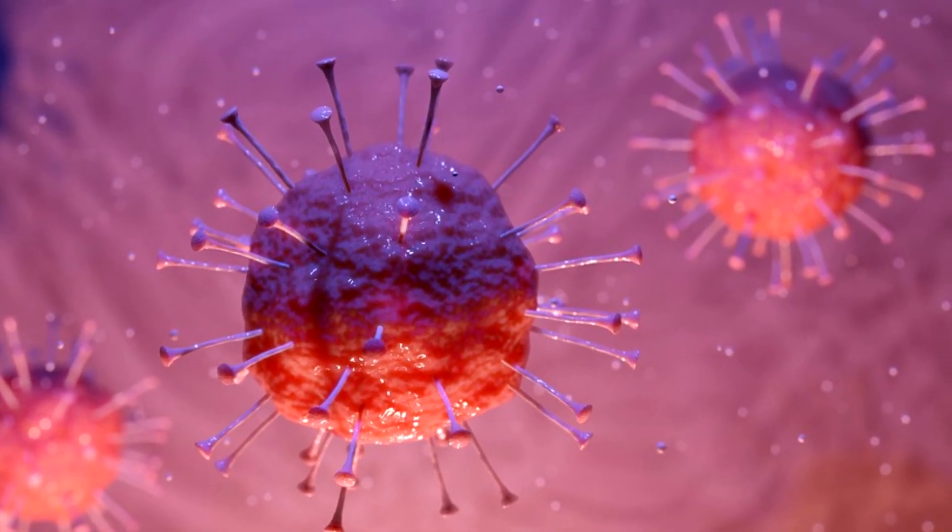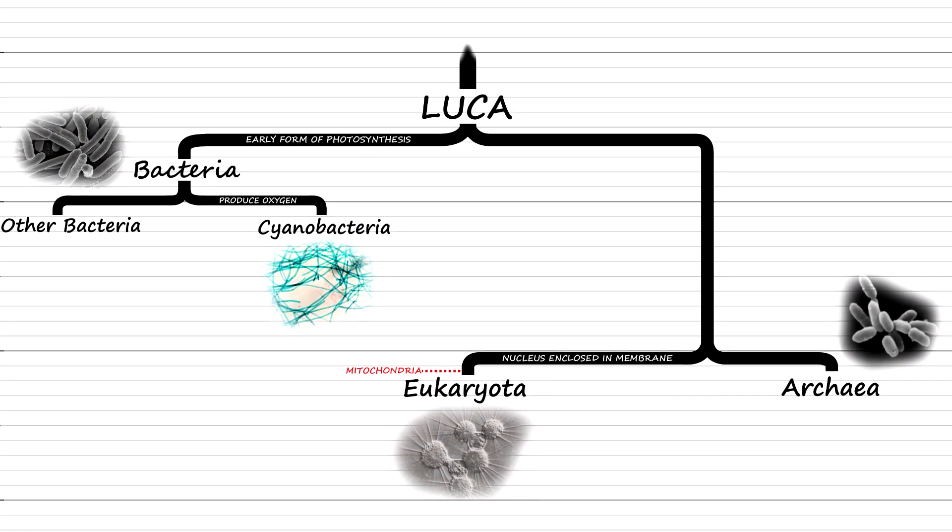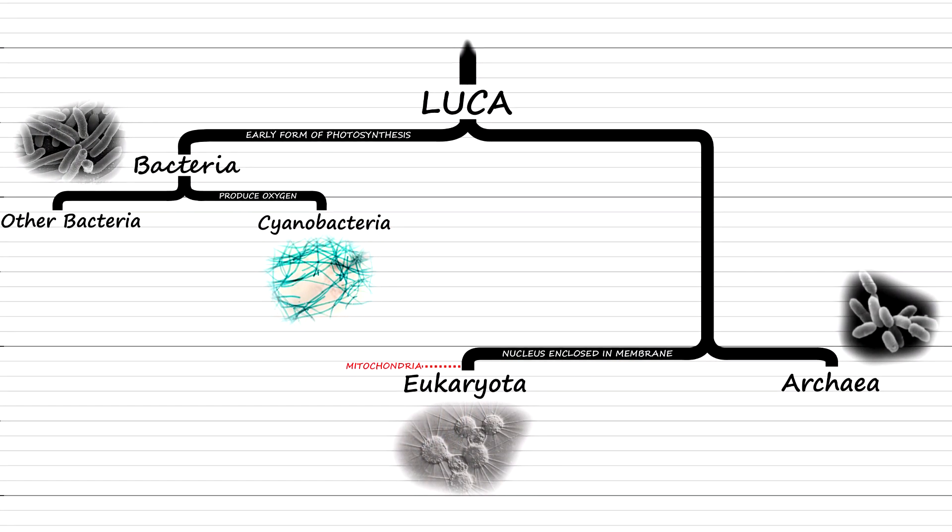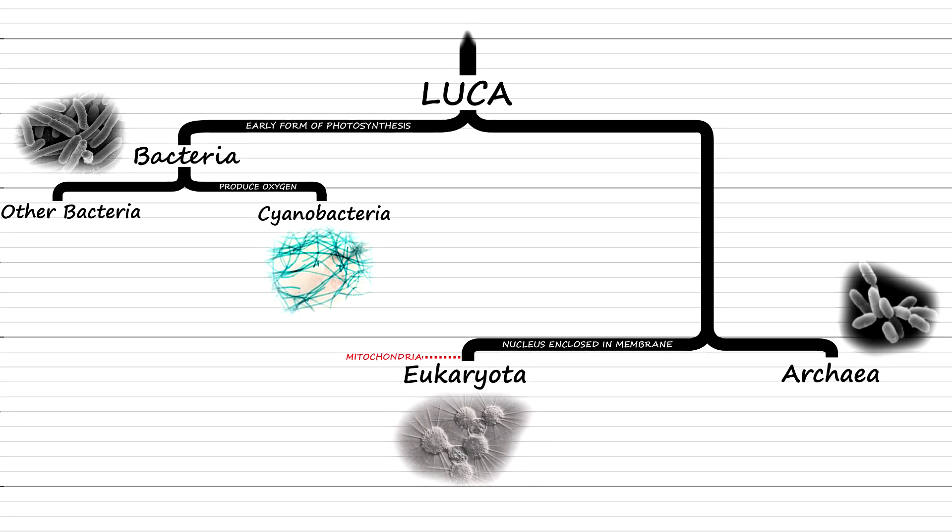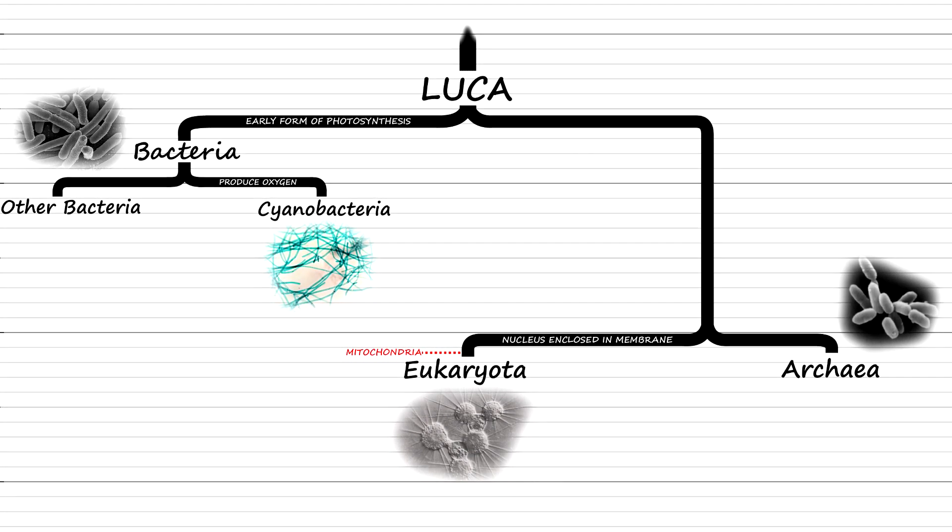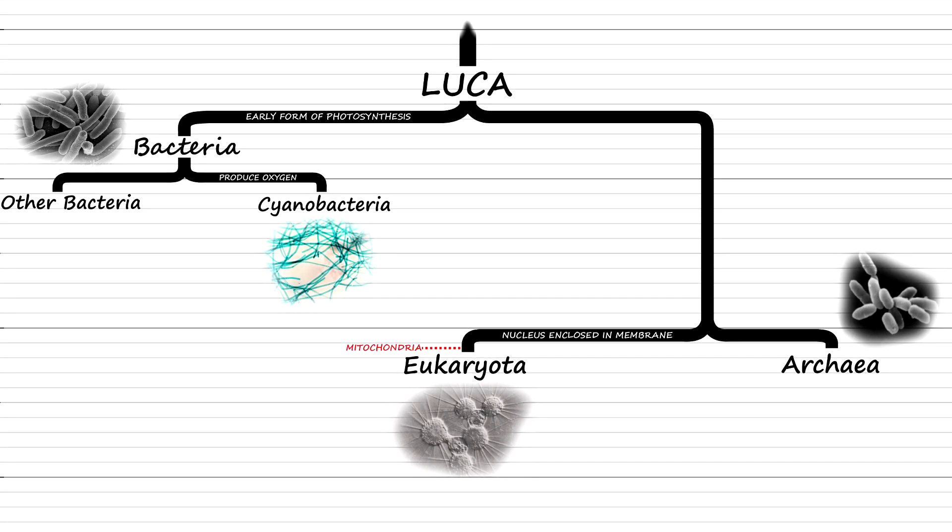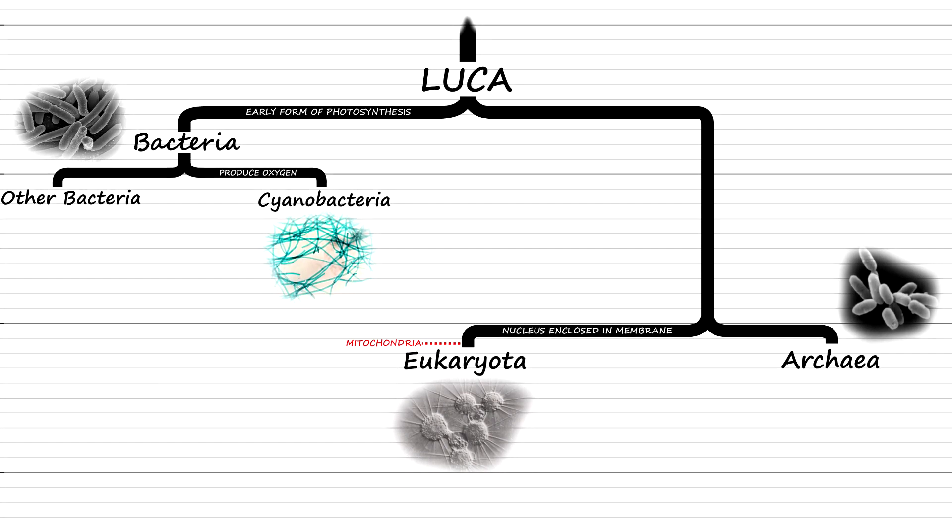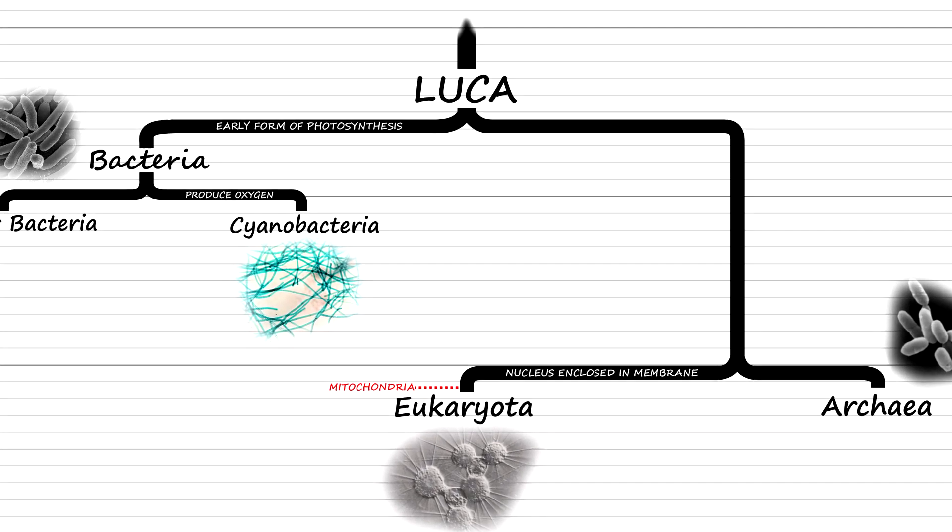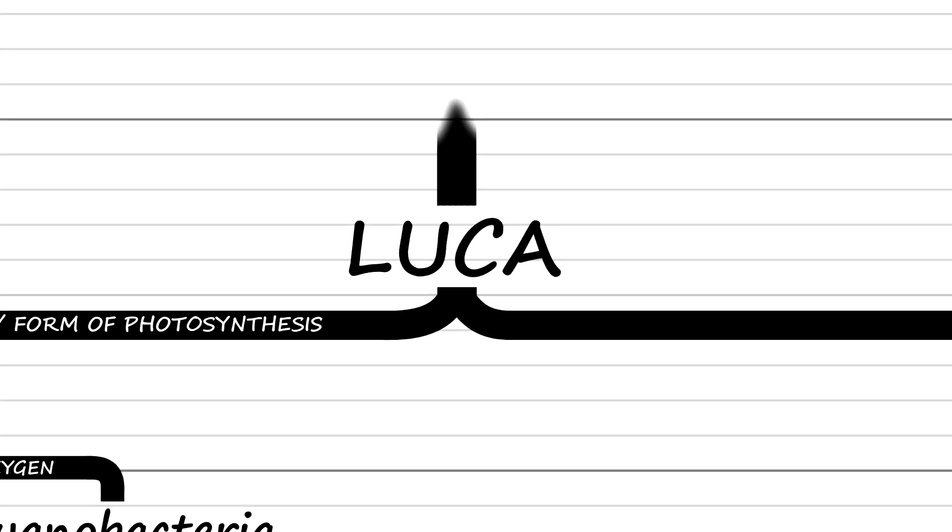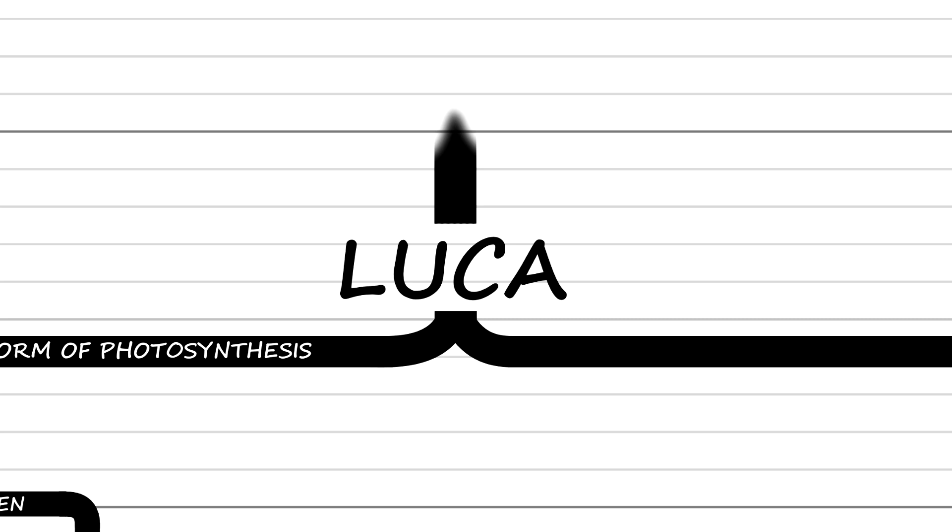Studies reveal that there is a link to viruses throughout all three domains of life, meaning bacteria, archaea and eukaryotes, as we have seen in a previous episode. This connection with all three domains of life suggests that viruses predate the diversification of the last universal common ancestor.